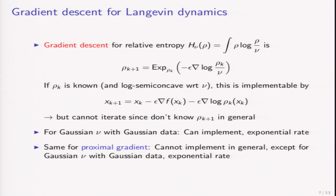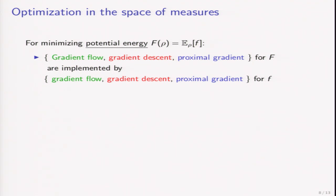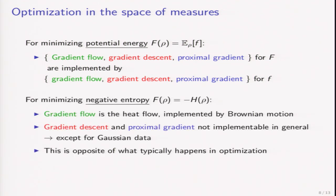The same story is true for the proximal gradient or backward method — we cannot implement it in general except for the Gaussian setting. The problem here is really because of entropy. If what we want to do is just minimize a potential energy, which is this expected value, then the basic algorithms such as gradient flow, gradient descent, and proximal gradient are all implemented by the corresponding methods for the function in space. But for negative entropy this is not true. The gradient flow of negative entropy is the heat flow, and it's exactly solvable by Brownian motion or Gaussian noise. But we cannot implement the forward or the backward method in general, except for Gaussian data. This is the opposite of what happens in optimization, where usually we cannot run gradient flow so we run gradient descent or approximated methods — here we can run the gradient flow but cannot run the forward or backward method.